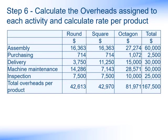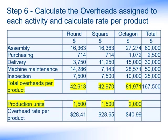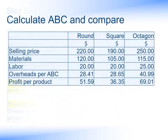With step six, we've calculated the overheads in total associated with the round, square and octagon products. But what we really want is a rate per product. So we take the total overheads allocated for each product and divide by the number of production units, which gives us an overhead rate per product. In the same way as when we used a single absorption rate of either machine hours or labour hours, we can allocate our overheads on the ABC basis to the products and arrive at not just the total product costs, but also the profit per product.